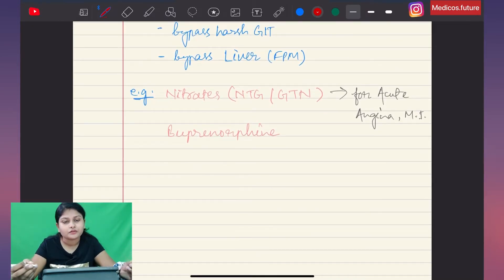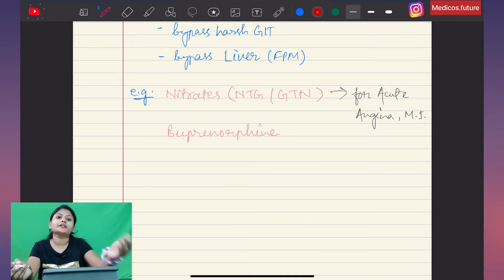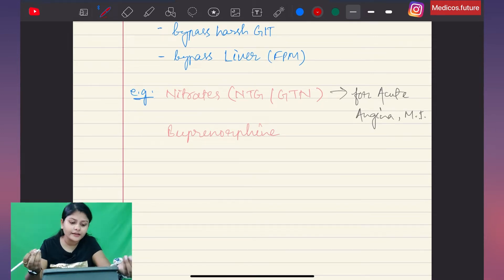Nitroglycerin is used for acute angina and MI. We all know acute angina and MI attacks are very serious conditions requiring immediate response, so nitrate tablets are taken sublingually for quick action. A less common example is buprenorphine.